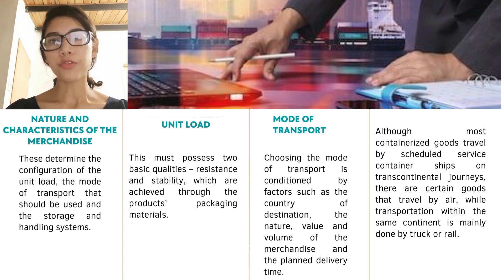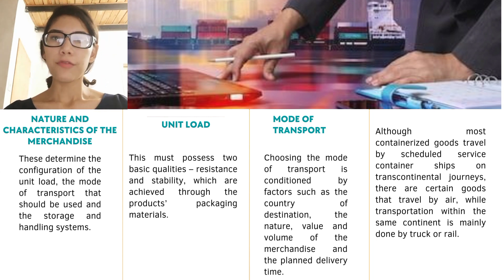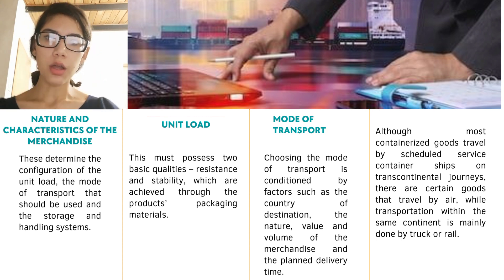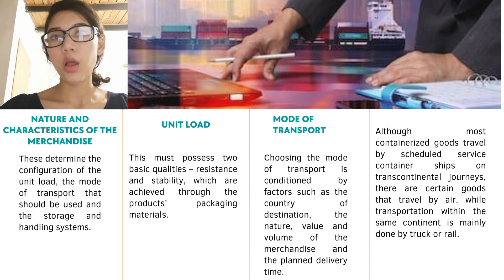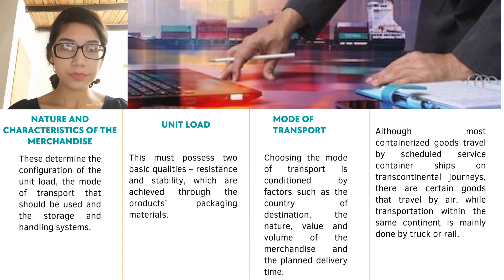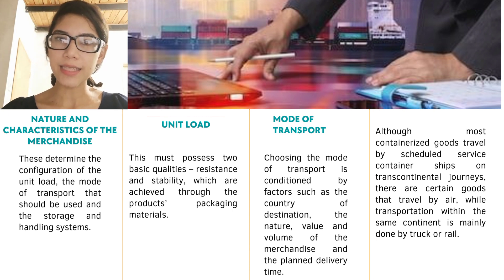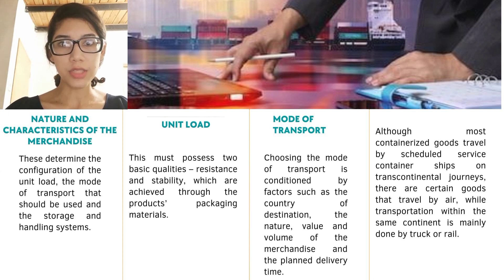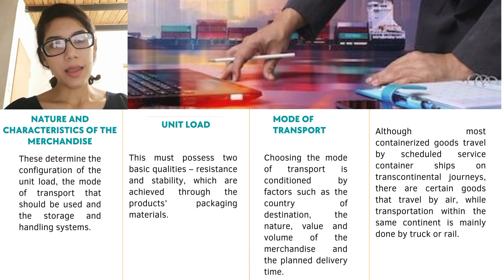Mode of transport: choosing the mode of transport is conditioned by factors such as the country of destination, the nature, value, and volume of the merchandise, and the planned delivery time. First, road: the contract is formalized in the CMR consignment note, regulated by the CMR agreement. Second, railway: formalized in the CIM consignment note, regulated by the CIM agreement.